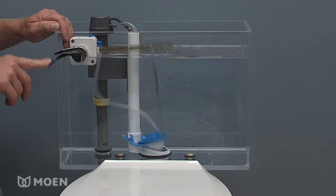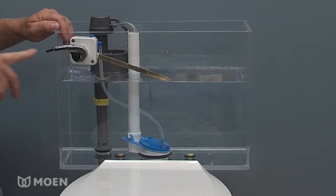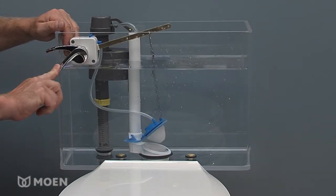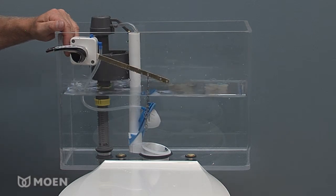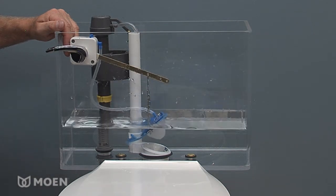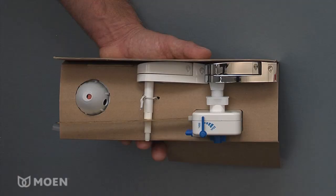The Dual Action Handle allows for a half flush for liquid waste or a full flush for solid waste. The Dual Flush Kit comes with both chrome and white handles. Choose your preference before beginning the installation.